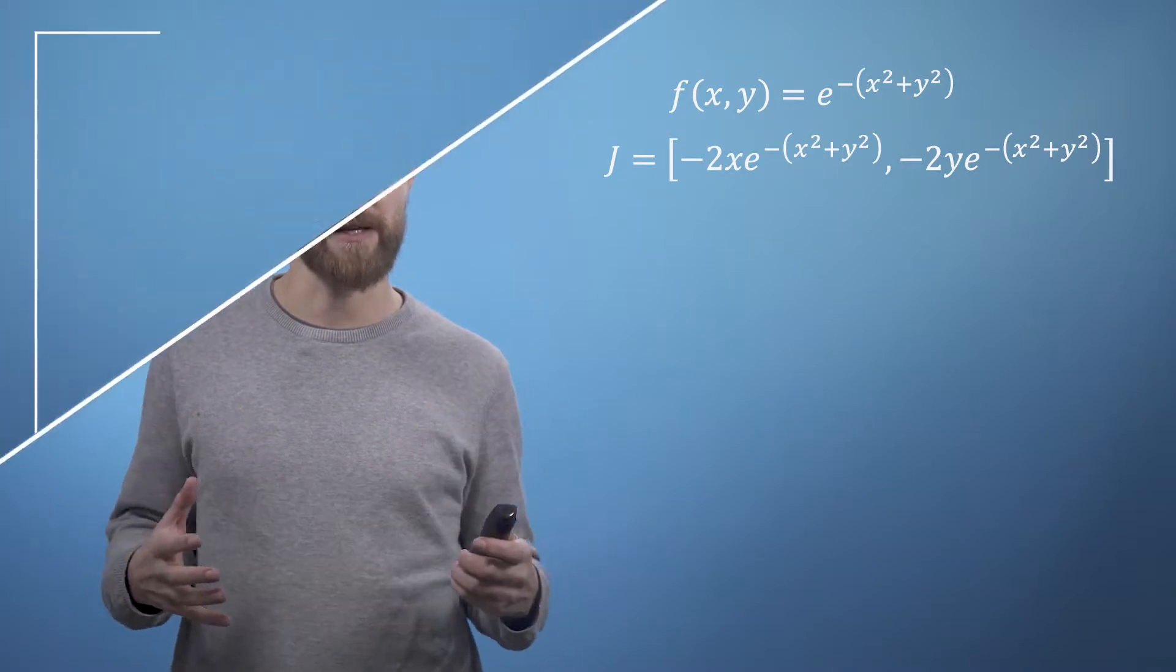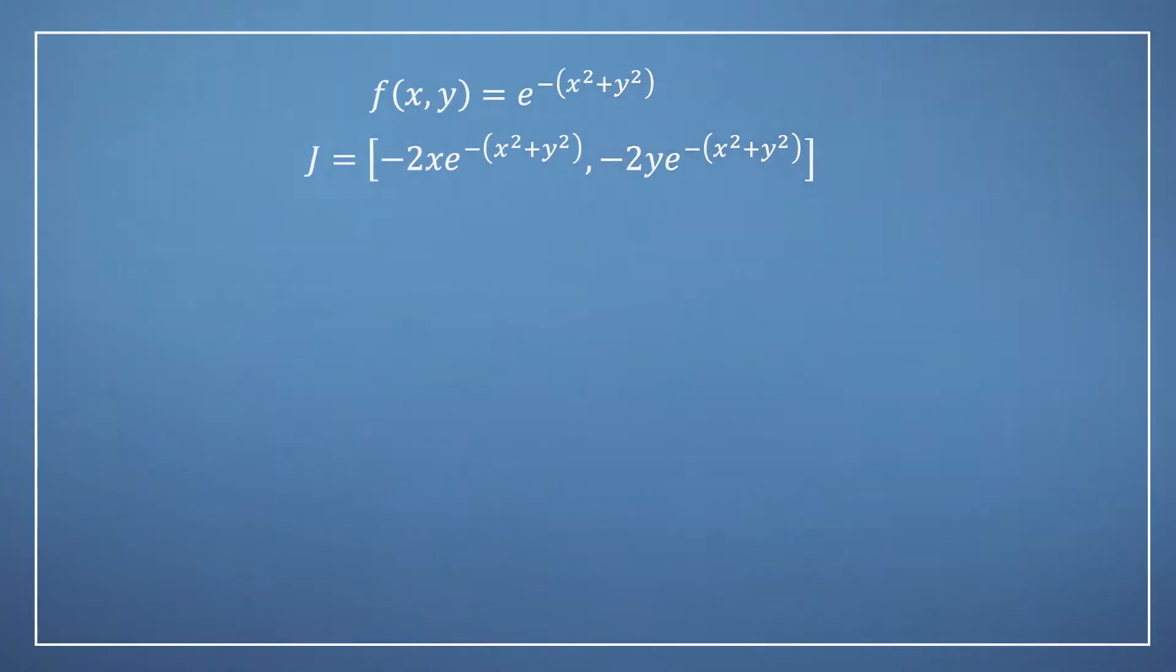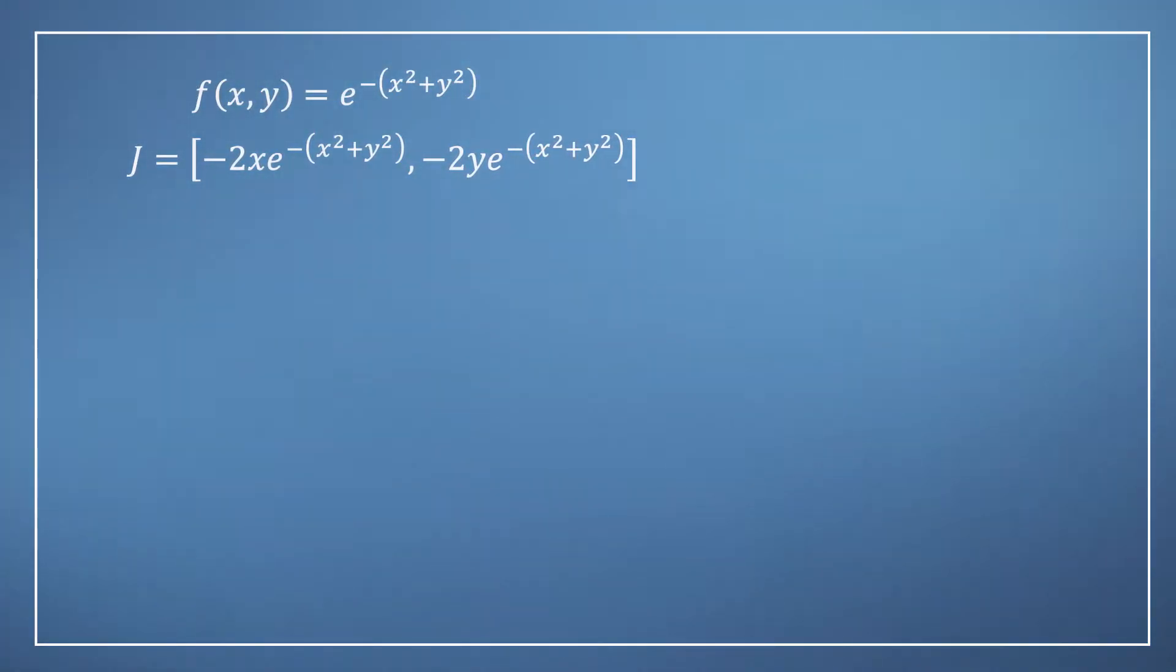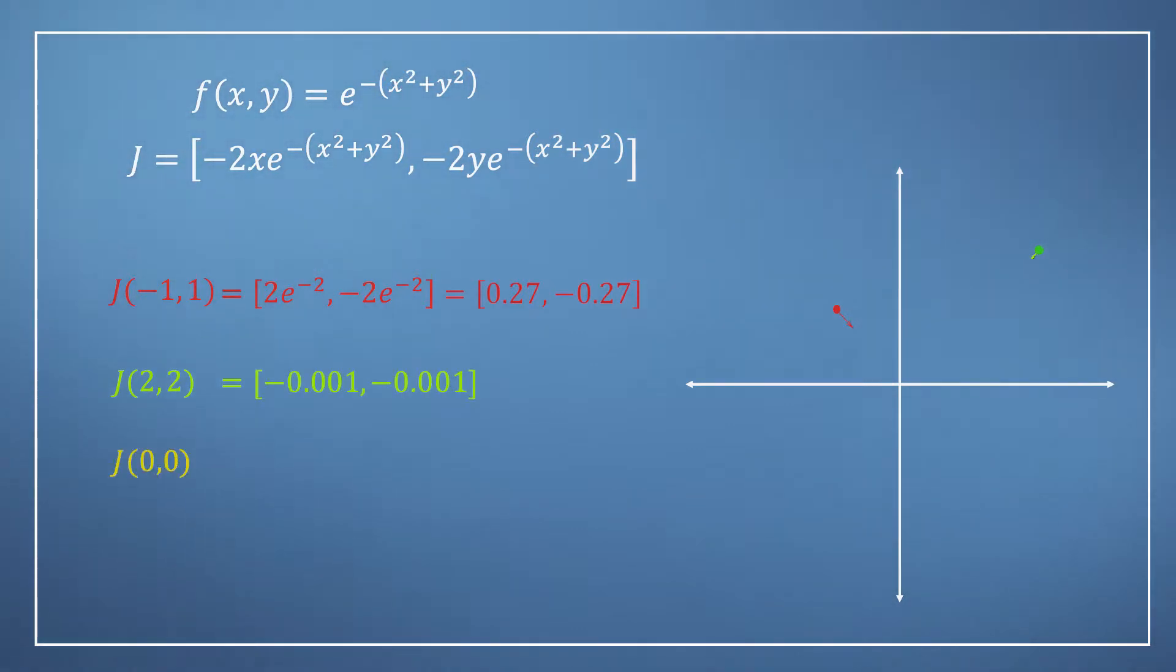Let's start by finding the Jacobian at a few specific points. Firstly the point which we'll highlight on our axis in pink. Substituting these coordinates into our Jacobian expression and simplifying we can see a vector pointing directly towards the origin. Next if we move further out to the point and find the Jacobian we now get a much smaller vector but pointing once again directly at the origin.